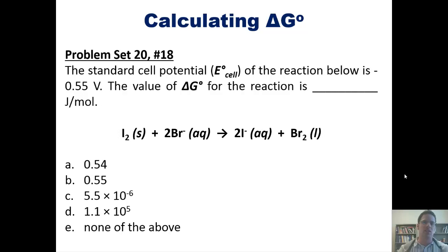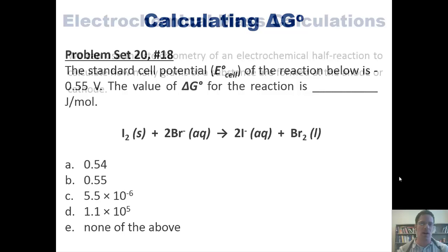Here's another one. The standard cell potential for this reaction is 0.55 volts. The value of delta G for this reaction is what? All right, let's go on.